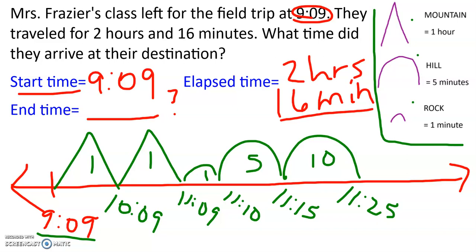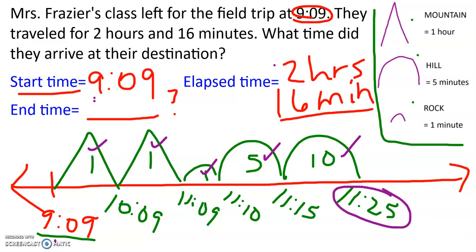I think I'm done, but I am going to double-check because I like to double and triple check things. My elapsed time that I needed to add to 9:09 is two hours and 16 minutes. So did I do that? I added one hour, two hours — so I added my two hours. And did I add 16 minutes? 10, 15, 16 minutes. Yes, I added the correct amount of time to 9:09. So what's my answer? The end time is whatever time you ended at on your number line. My end time is 11:25.